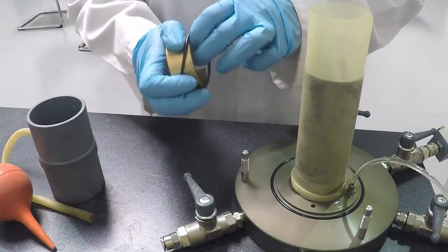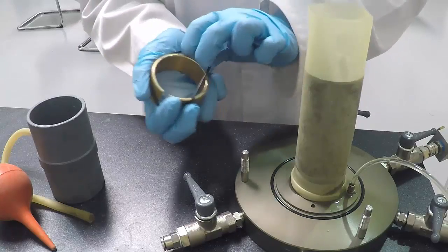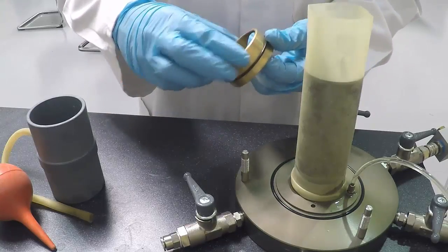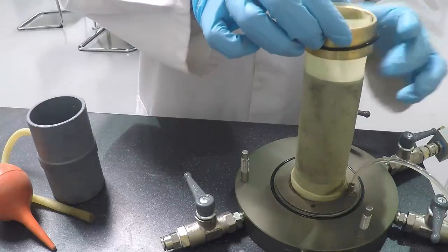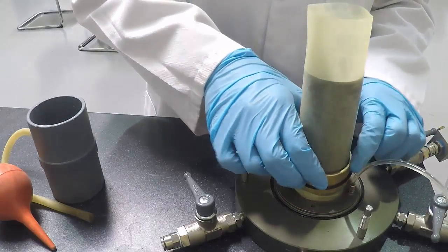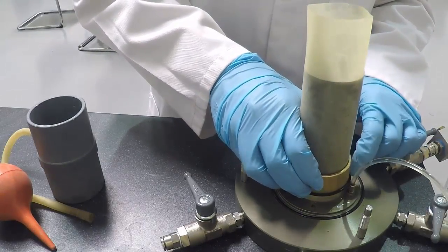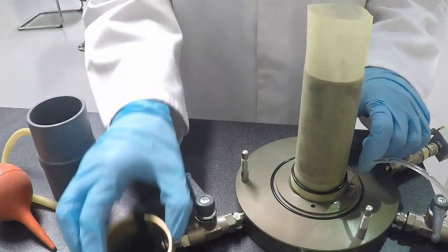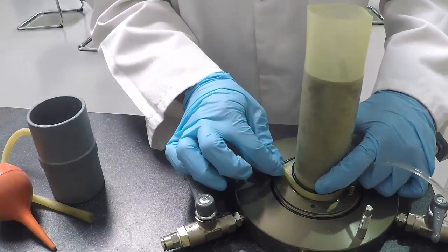You will now need to secure the membrane in position with an O-ring using an O-ring stretcher. Slide the stretcher over the specimen and roll the O-ring down. Ensure the O-ring rolls onto the base pedestal and not onto the specimen.